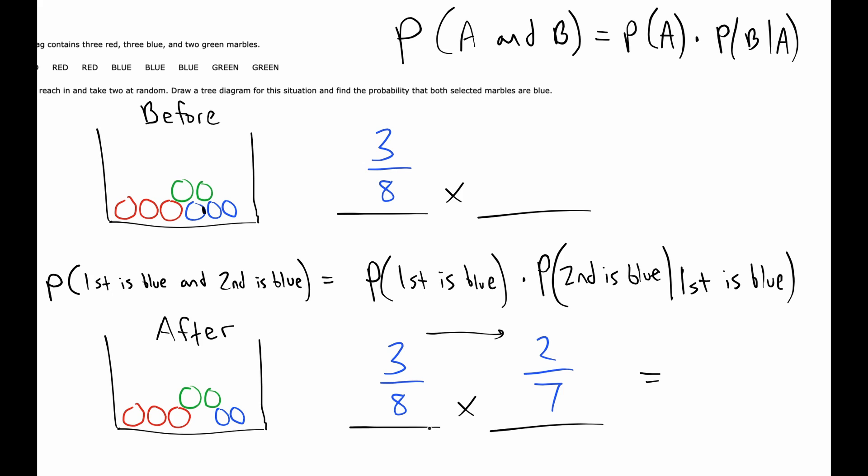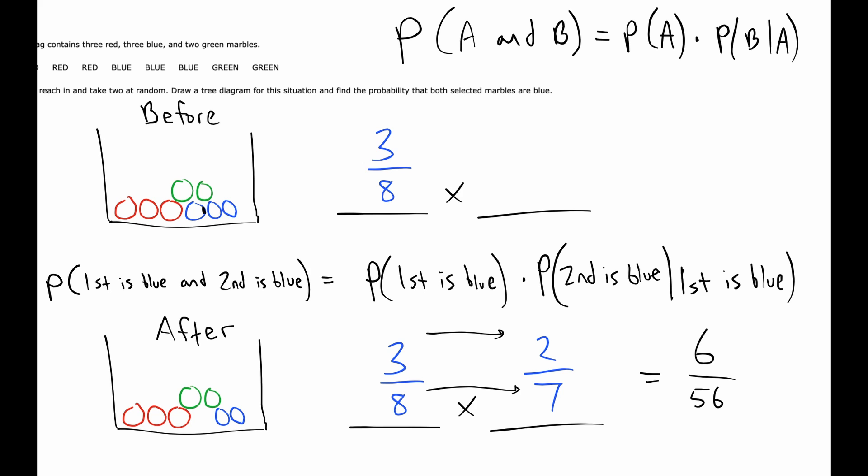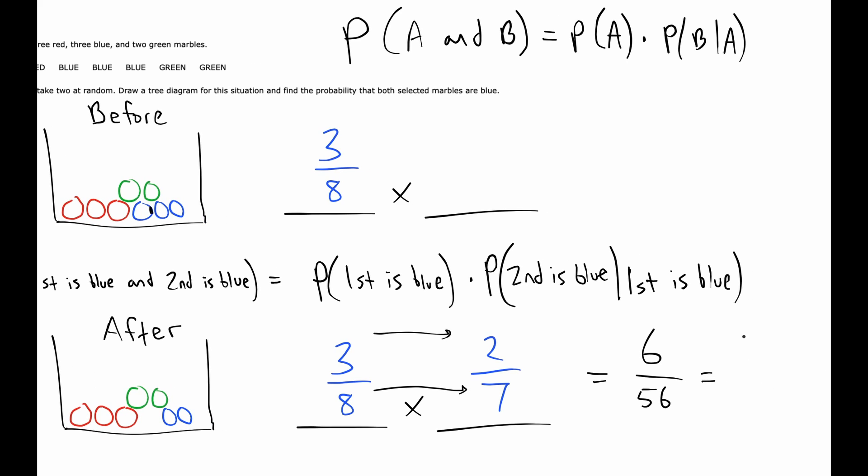Multiply straight across tops and bottoms, you get six on top and 56 on the bottom. That can reduce to 3 over 28. That's going to be the probability of them both being blue.